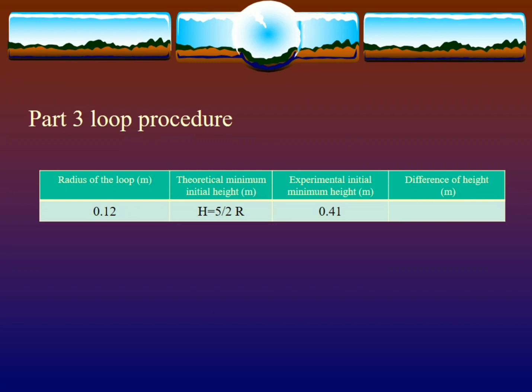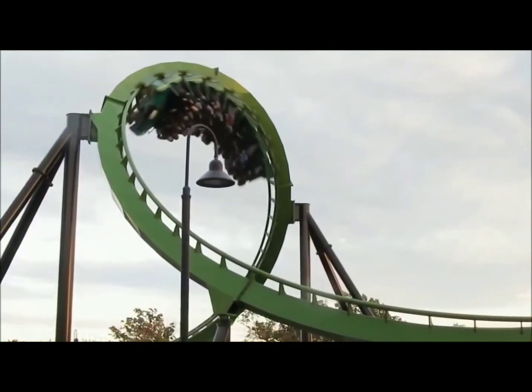This is part three, the loop procedure. You're given the radius of the loop and the theoretical minimum initial height. You are using this equation to get the theoretical minimum height, the theoretical minimum initial height and experimental initial height. There may be some questions you must apply in your manual after this about potential and kinetic energy when in motion.